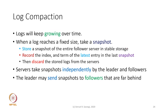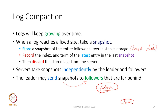Log compaction addresses the fact that logs keep growing over time. When a log reaches a fixed size, we take a snapshot — a copy of the log stored in stable storage like a hard disk. We record the index and term of the latest entry in the snapshot and discard the logs from servers. Servers can take snapshots independently. Additionally, if a follower is really behind the leader, the leader can send it a snapshot so the follower can add all the log entries it does not have.